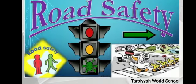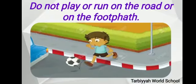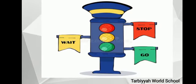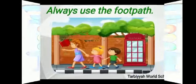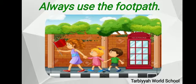Now let's see the safety rules we should follow on the road. We do not play or run on the road or on the footpath. We should always obey traffic rules: stop when the light is red, go when the light is green, and wait and be ready when the light is yellow. Always use the footpath — never walk on the road.